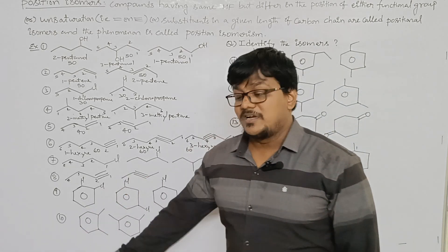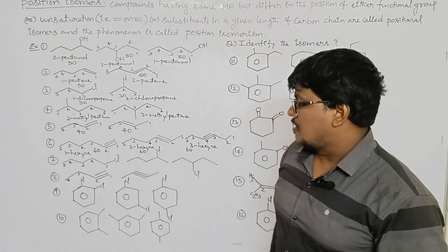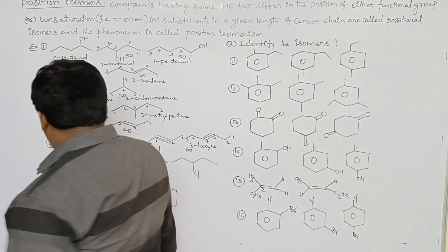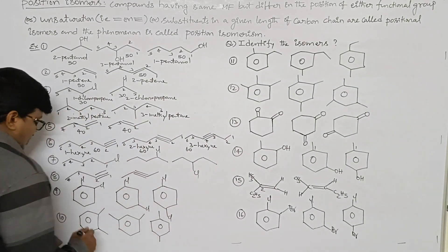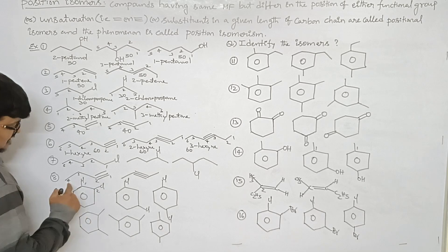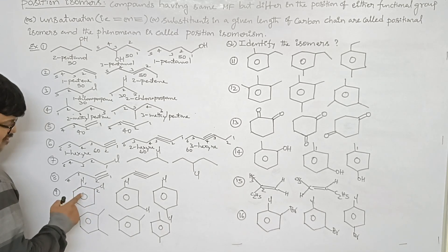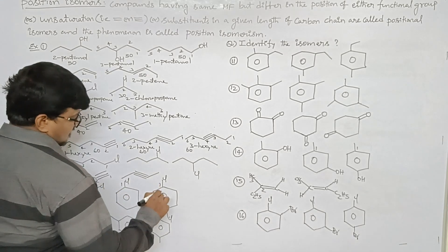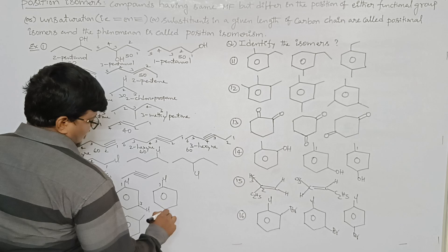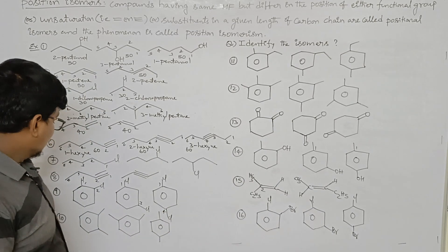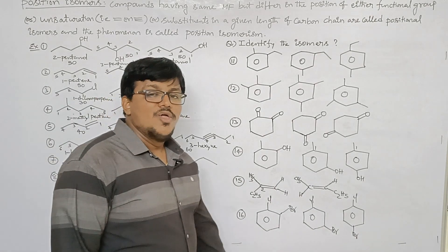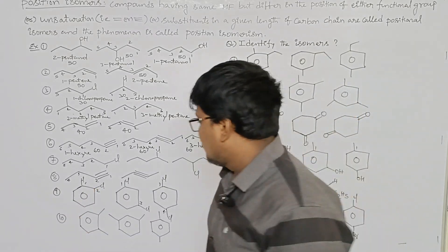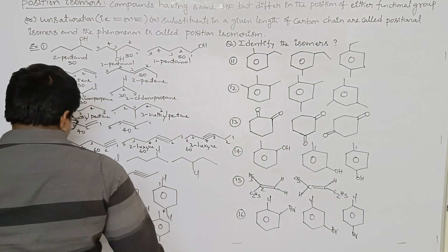The ninth example — very important — is an aromatic compound, benzene. Benzene having two chlorines present in the 1,2 positions is 1,2-dichlorobenzene. The second arrangement is 1,3-dichlorobenzene. The third is 1,4-dichlorobenzene. All three compounds have the same isomeric number.